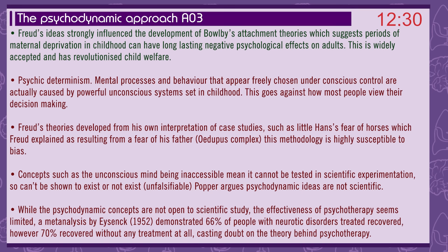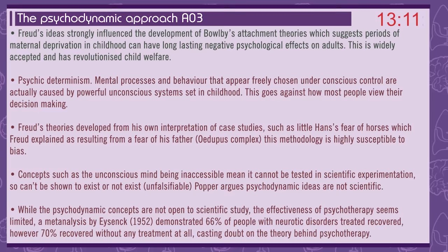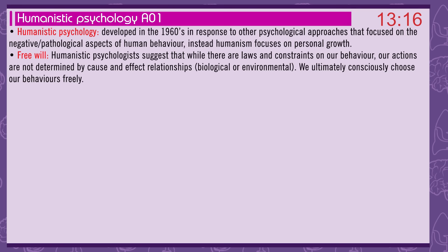Psychic determinism: mental processes and behaviour that appear freely chosen are actually caused by powerful unconscious systems set in childhood. Freud's theory was developed from his own interpretation of case studies, such as Little Hans's fear of horses, which Freud explained as resulting from fear of his father — the Oedipus Complex — making this methodology highly susceptible to bias. Concepts such as the unconscious mind being inaccessible mean it cannot be tested in scientific experimentation — it's unfalsifiable. Popper argues this means psychodynamic ideas are not scientific. A meta-analysis by Eysenck in 1952 demonstrated 66% of people with neurotic disorders who were treated recovered; however, 70% recovered without any treatment, casting doubt on the theory behind psychotherapy.